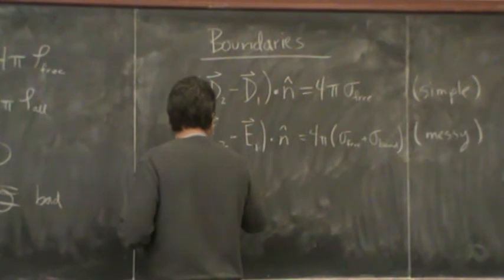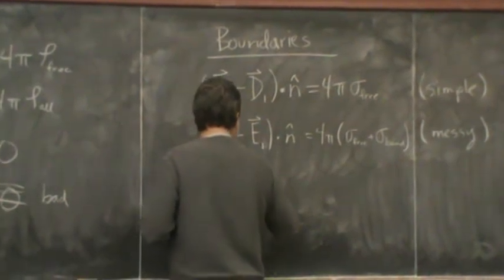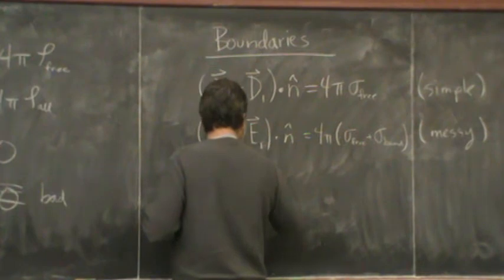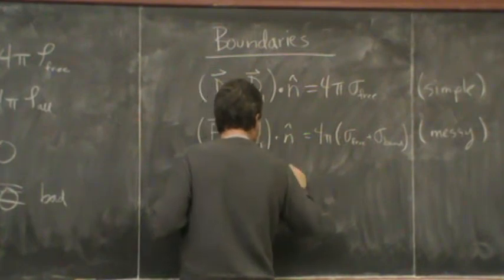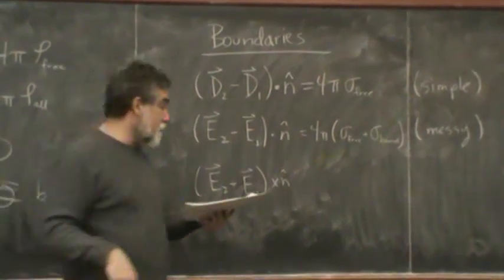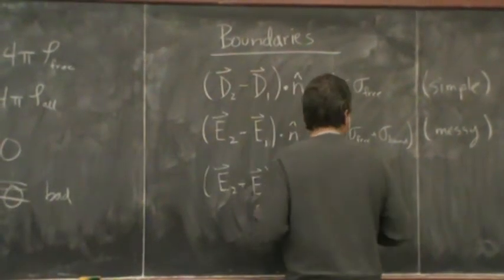And one more relationship. E2 minus E1 cross. So we're talking about the curl in the end of the electric field. It's still zero.